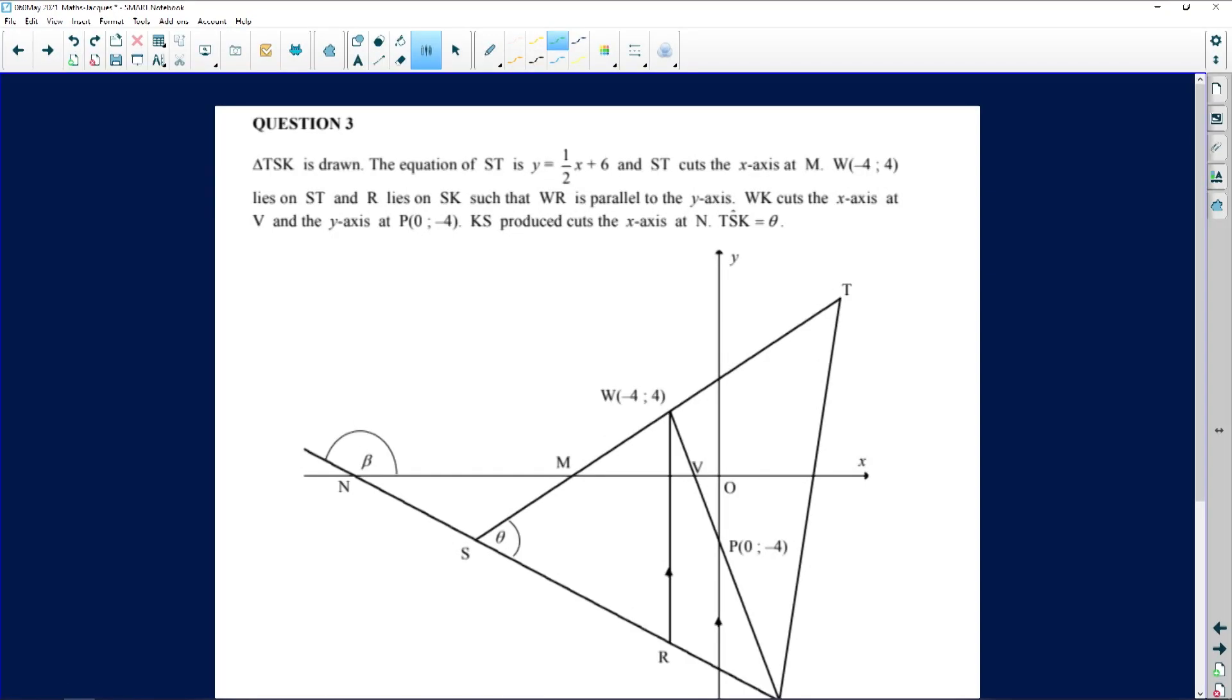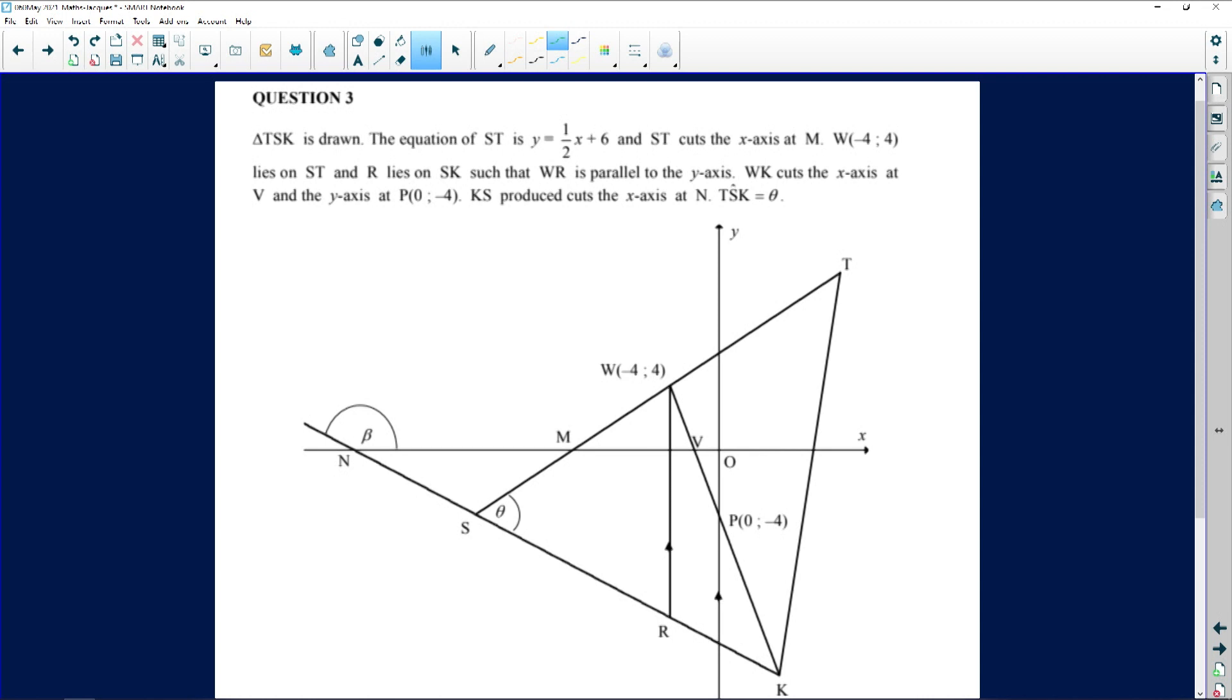This is question three, it is an analytical geometry question. It looks long so I am going to start immediately. They say to us TSK is drawn, triangle TSK. There's T, there's S, there's K. This means all of these are straight lines. Remember, a triangle is a polygon and a polygon is made up of straight lines.